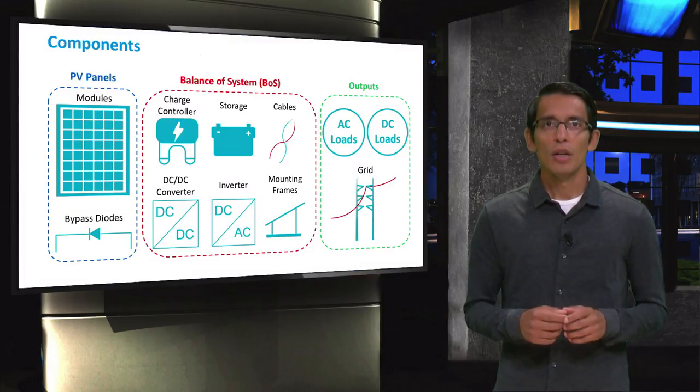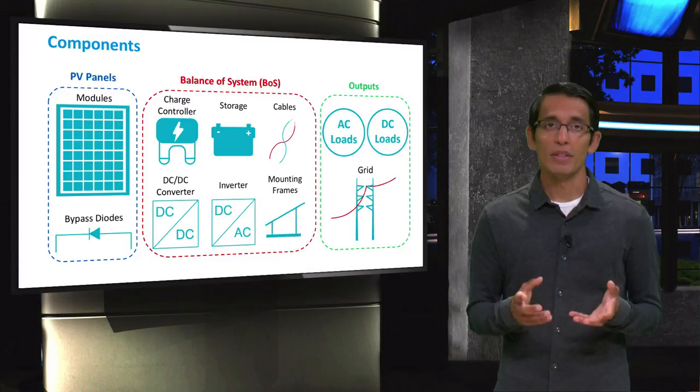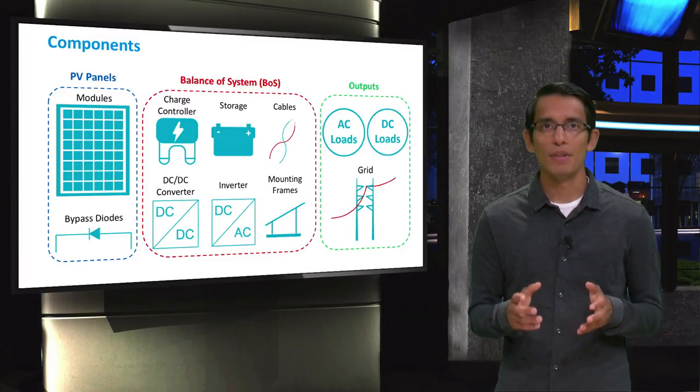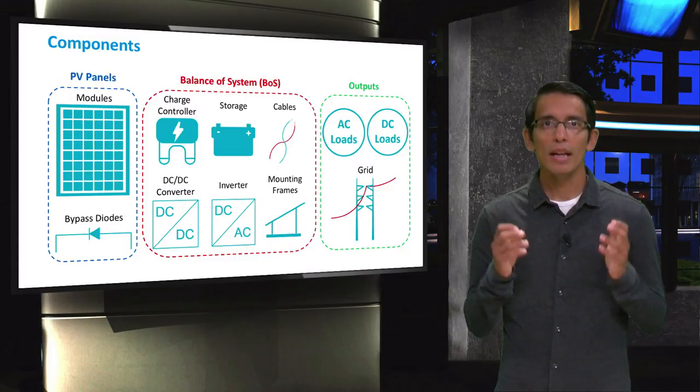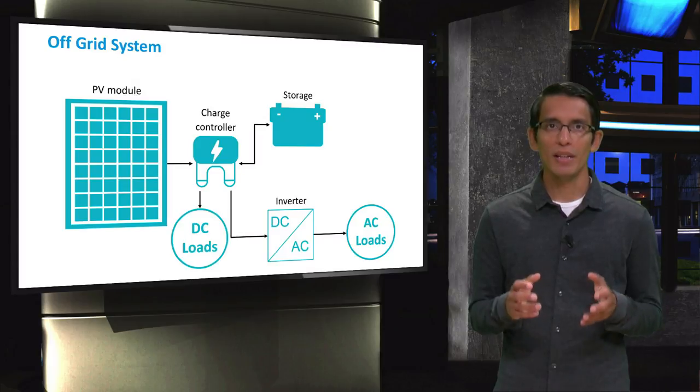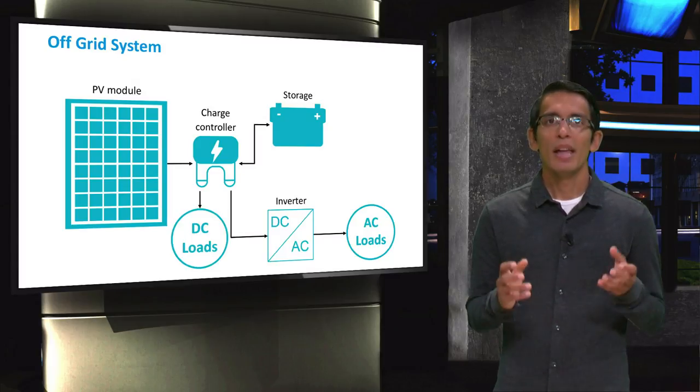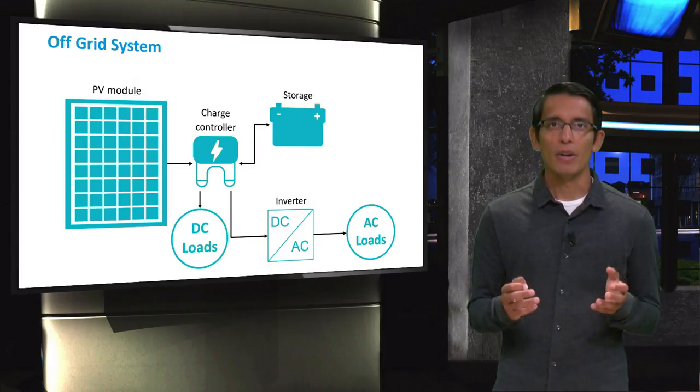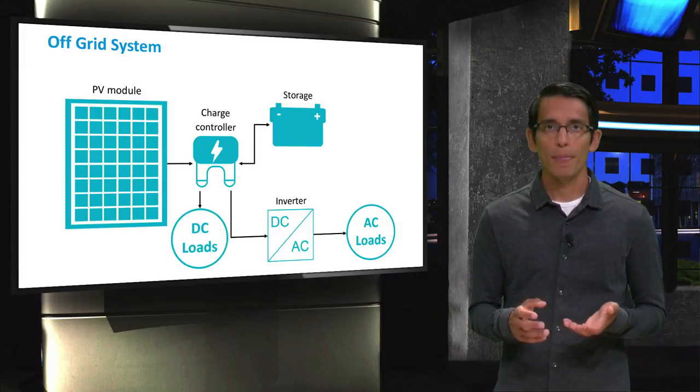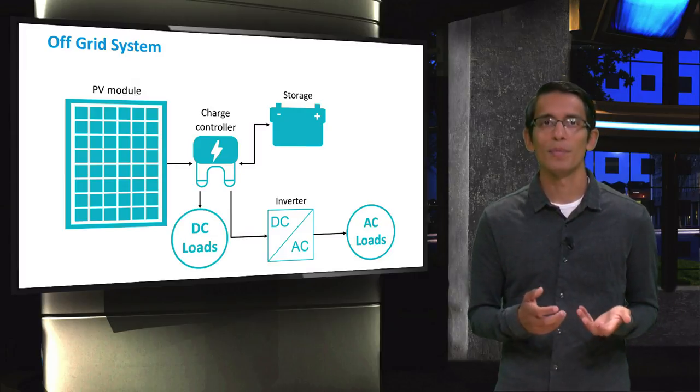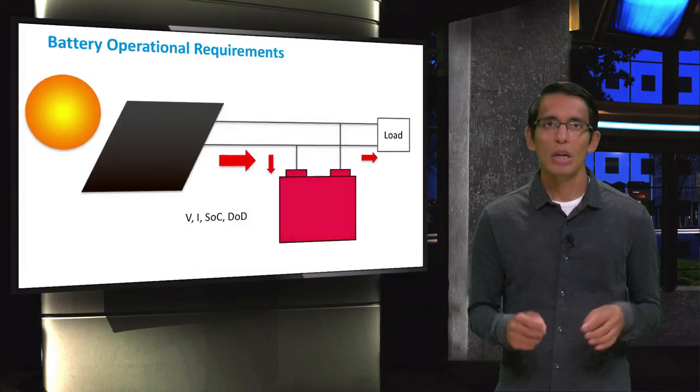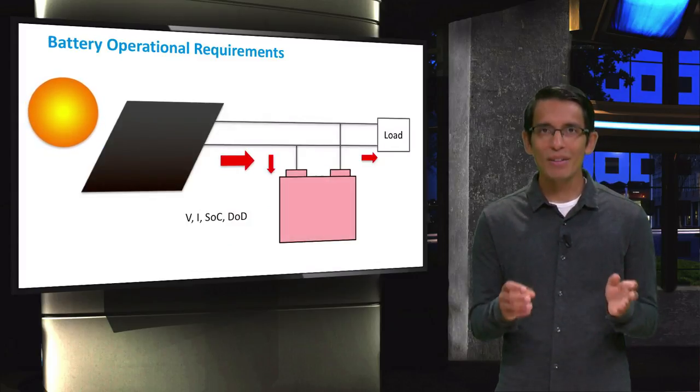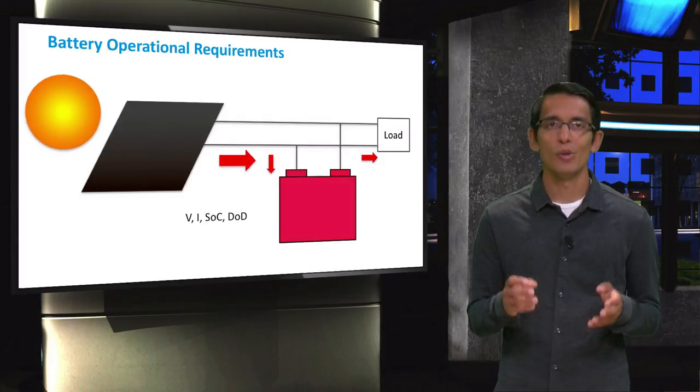The charge controller performs an important part of the PV system. Particularly, they are important in standalone PV systems where battery storage is a necessity. In such a PV system, the charge controller is generally connected to PV modules. It is also connected to the battery and other loads of the system. So why do we need this component? To answer that, let's consider a simple PV system where the PV module is connected directly to the battery and no charge controller is present.